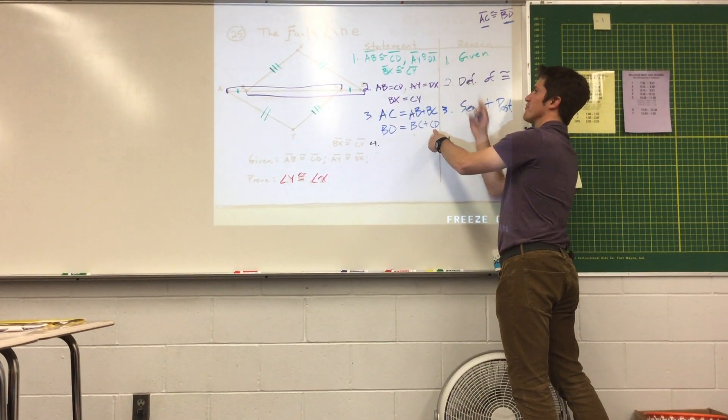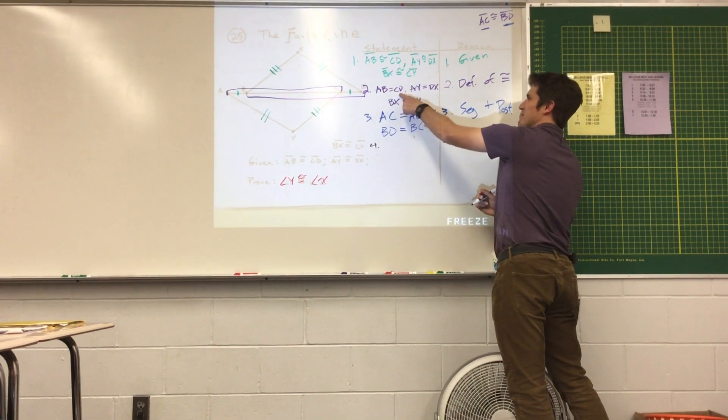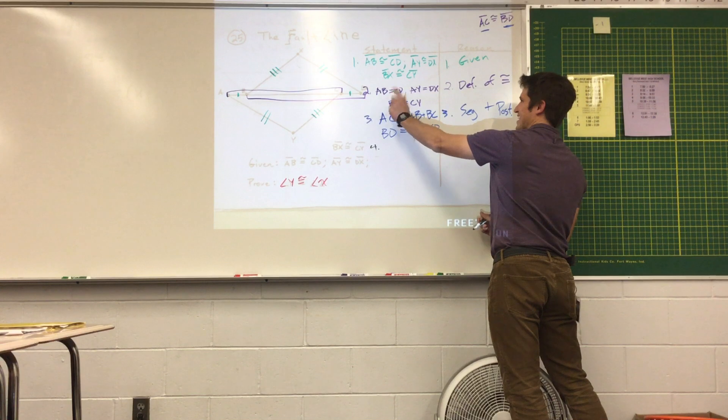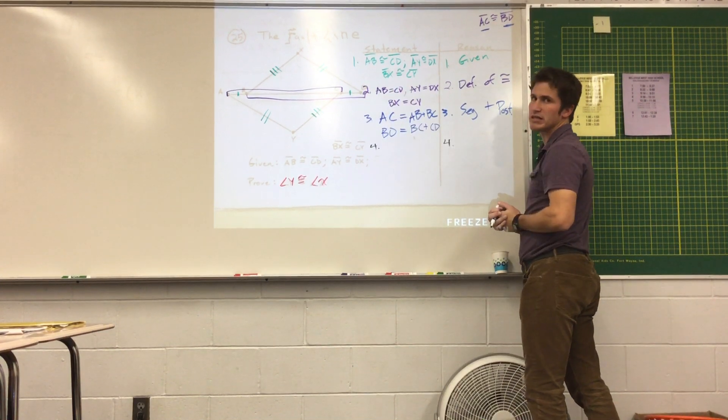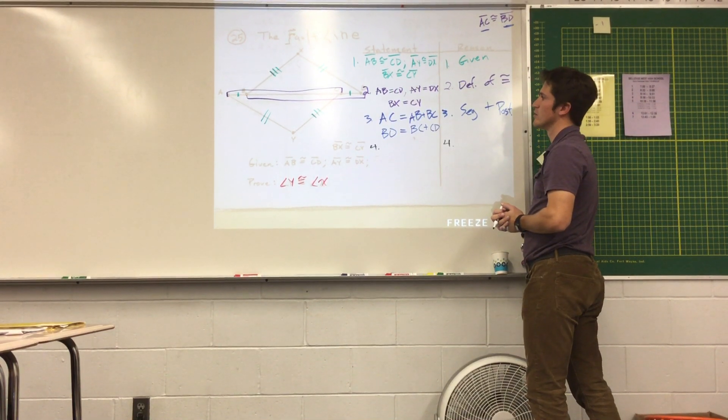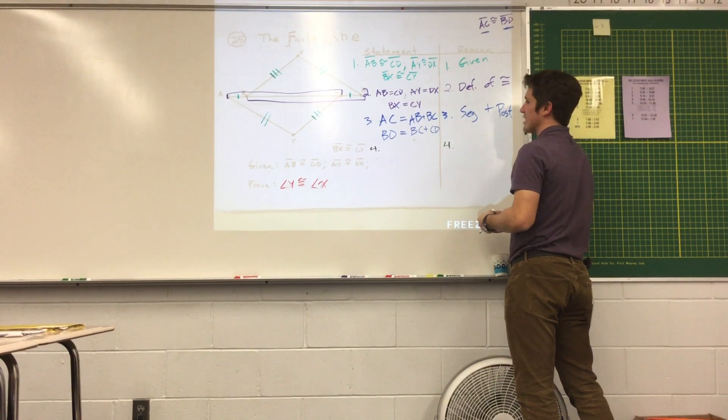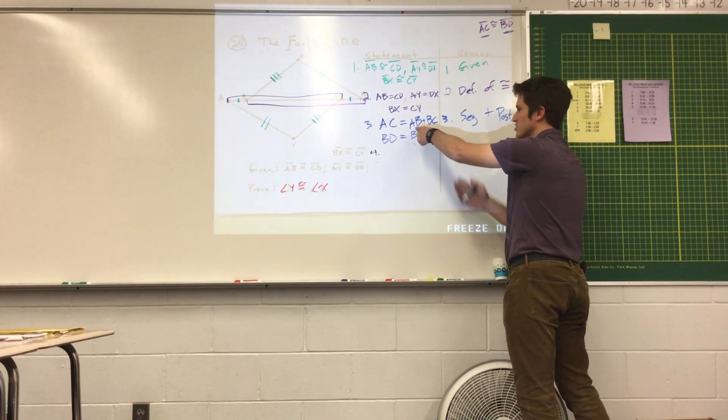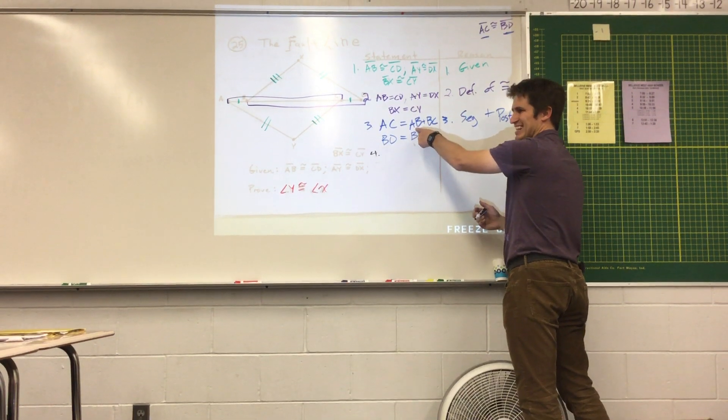But if you look up previously in the proof, AB and CB are the same thing. Same length. So I can interchangeably use AB and CB. So instead of writing AB, I'm going to write CD. So then they're saying the exact same thing.